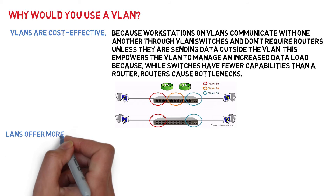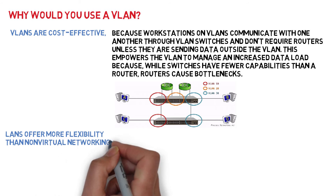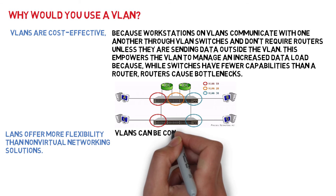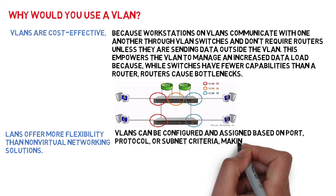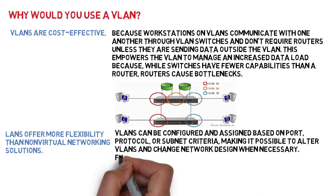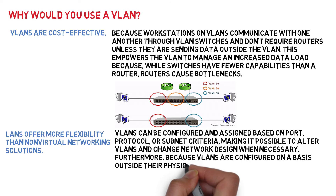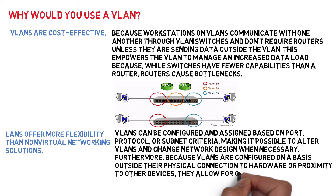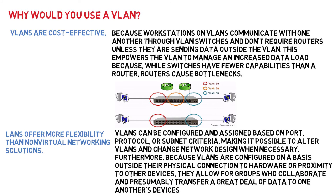VLANs can be configured and assigned based on port, protocol, or subnet criteria, making it possible to alter VLANs and change network design when necessary. Furthermore, because VLANs are configured on a basis outside their physical connection to hardware or proximity to other devices, they allow for groups who collaborate and presumably transfer a great deal of data to one another's devices.